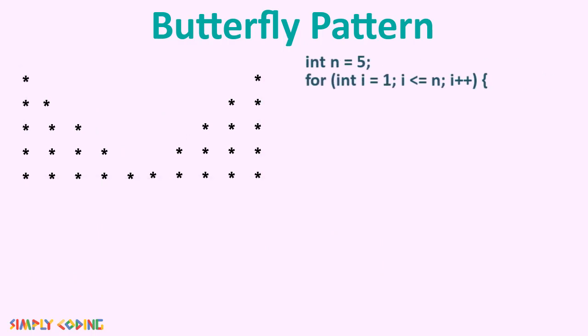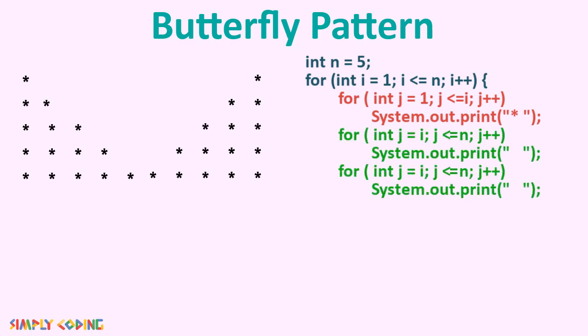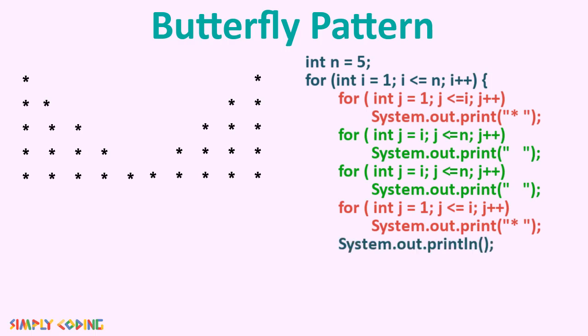We first write the outer loop which runs from 1 to n as there is no change in number of rows. Then we bring in one j loop for increasing triangle of stars, then two decreasing triangles of space and one more increasing triangle of stars. Don't forget to put the empty println as the last statement. When we run it, we get the two wings, but we see that they are far apart.